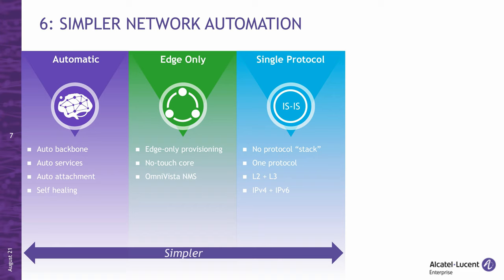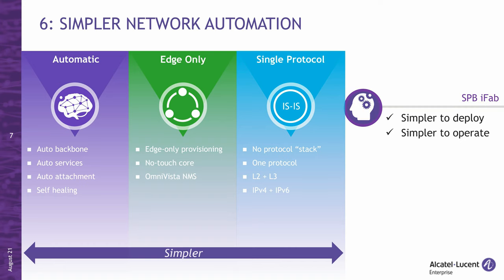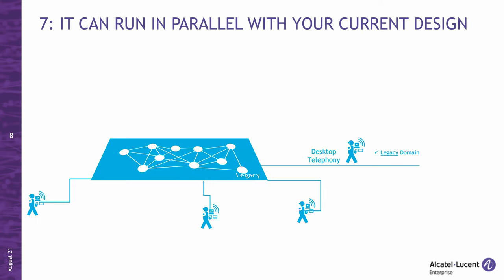Bottom line: SPB is much simpler than other options it is sometimes compared to — much simpler to deploy and operate. Number seven: another little-known fact about SPB is that it can run in parallel with existing legacy designs based on VLANs, routing, etc. It can be enabled on the same devices and on the same interfaces and will run like ships in the night with your existing design. Both technologies can be enabled independently and without conflicting with one another.